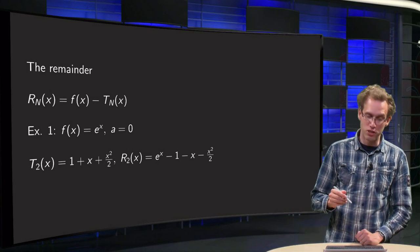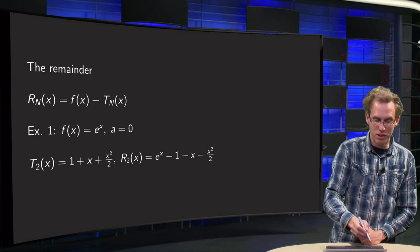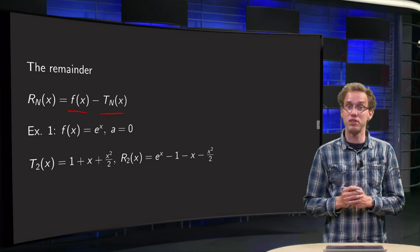So, first let's define the remainder. The remainder is just what remains, so the difference between f of x and its n-th order Taylor polynomial.